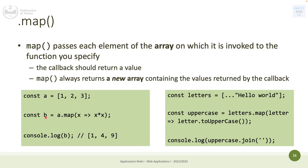With map you can do manipulations on an array without changing the original in place, always returning a new array. That could be multiplication, or putting all letters uppercase like we saw with forEach. Instead of storing things in a separate variable, map places all uppercase letters in a new array — so each letter is picked, uppercased, and stored in the returned array.